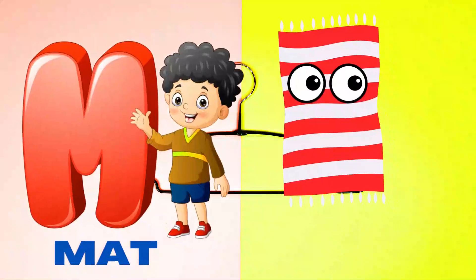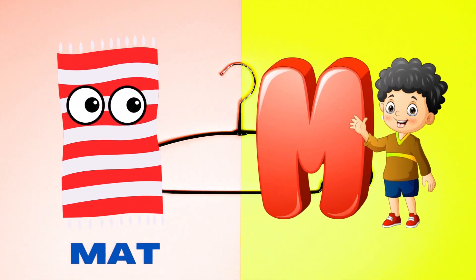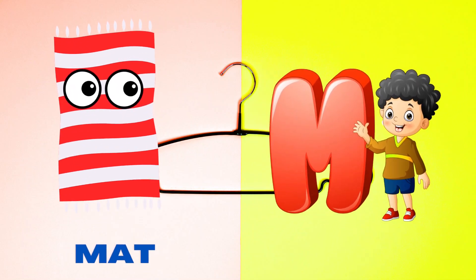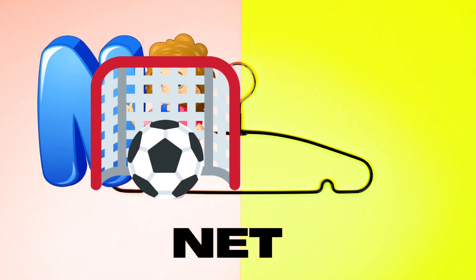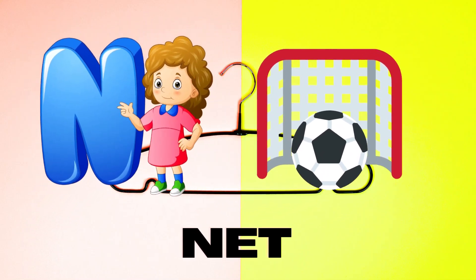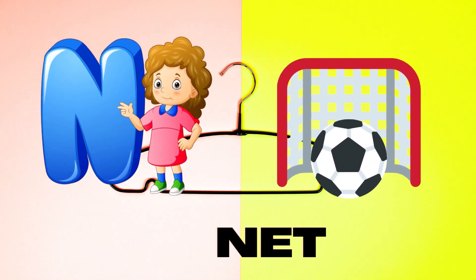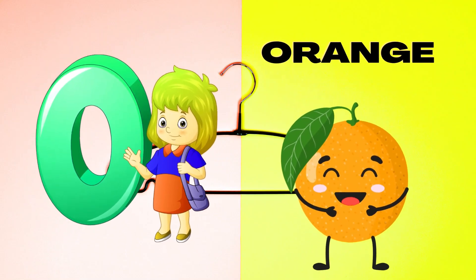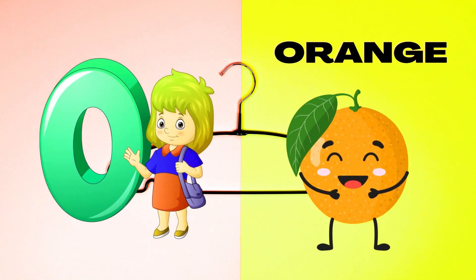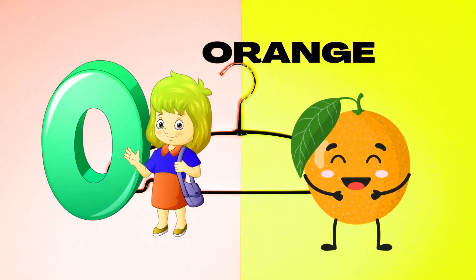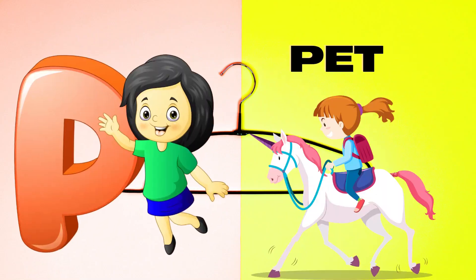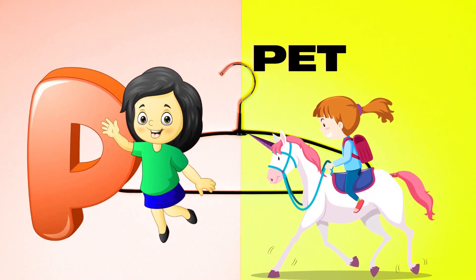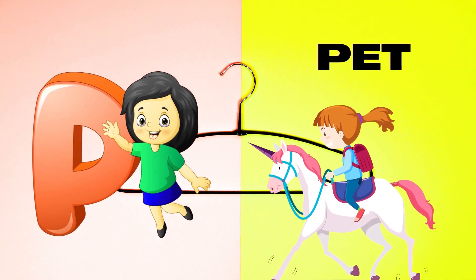M is for Mat, M-M-Mat. N is for Net, N-N-Net. O is for Orange, O-O-Orange. P is for Pet, P-P-Pet.